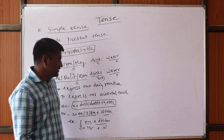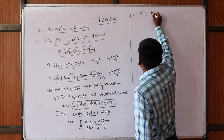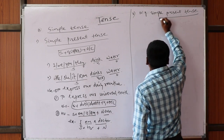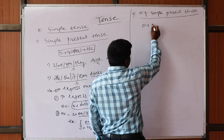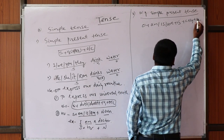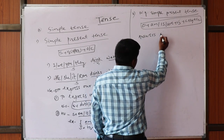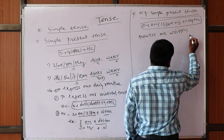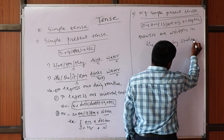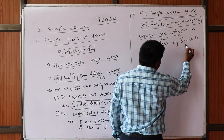And let me explain the passive voice of simple present tense. The passive formula is Object + am/is/are + V3 + by + Subject. For example: 'Answers are written in the class by students.' Here 'answers' is the object, 'are' is the helping verb, 'written' is the past participle, and 'in the class' is the complement.